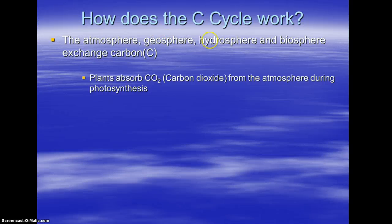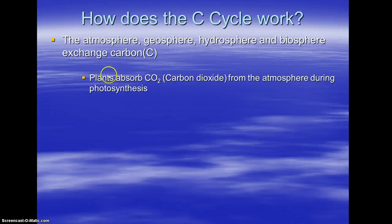The atmosphere, geosphere, hydrosphere, and biosphere all exchange carbon — this is the Earth's system, and all these spheres interact with one another. So you could go back to that carbon cycle and look for what form carbon comes in in the atmosphere, in the geosphere, in the hydrosphere, and in the biosphere — those forms are exchanged between those spheres. Plants, part of the biosphere, absorb CO2, part of the atmosphere, during photosynthesis. So we can see the sphere interactions there.